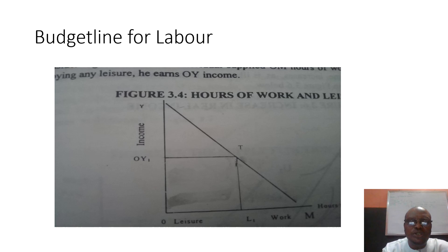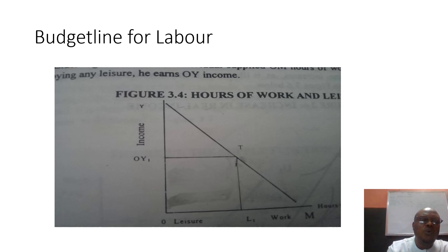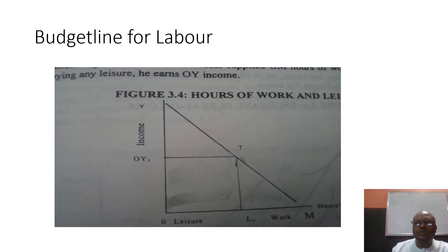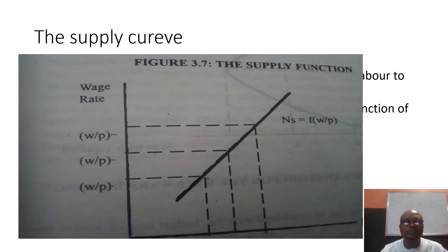However, if you now value leisure, then you supply only OL1 hours of work. There is no way you will earn OY wages; what you are going to earn is OY1 wages, because you have reduced your hour supply for work — you now value leisure more than income. When you put the budget line for labor and the map of indifference curves together, you will be able to derive the supply curve or supply function.